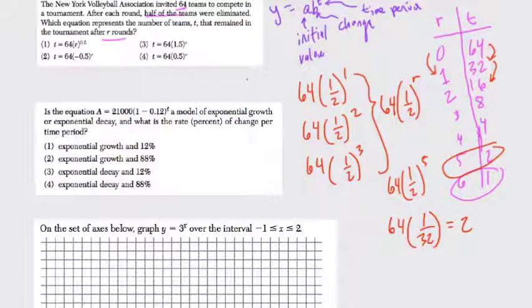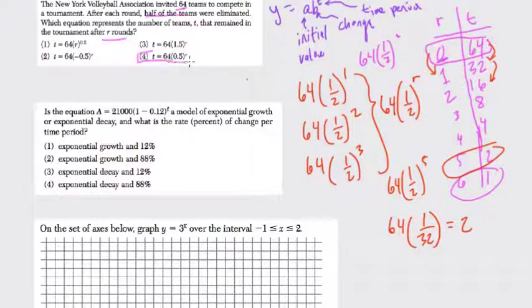And it even works for the zero case because when r is zero, you have 64 times 1 half to the zero. Now, this 1 half to the zero power is 1, so it would be 64 times 1. And that's true - there were 64 teams at the start when there were zero rounds. So this can be shown here: t equals 64 times 0.5 to the r power, or to the amount of rounds that we have.